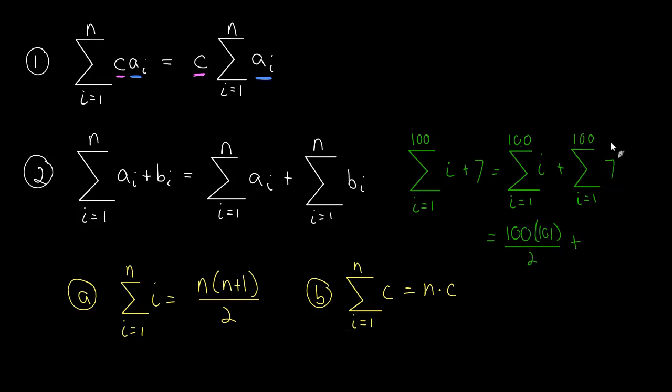Just so we're totally clear, we use formula B for this part, because we're just summing a constant. And we use formula A for this part, because we're summing up i. Now this is 5,050 plus 700, which is just 5,750.